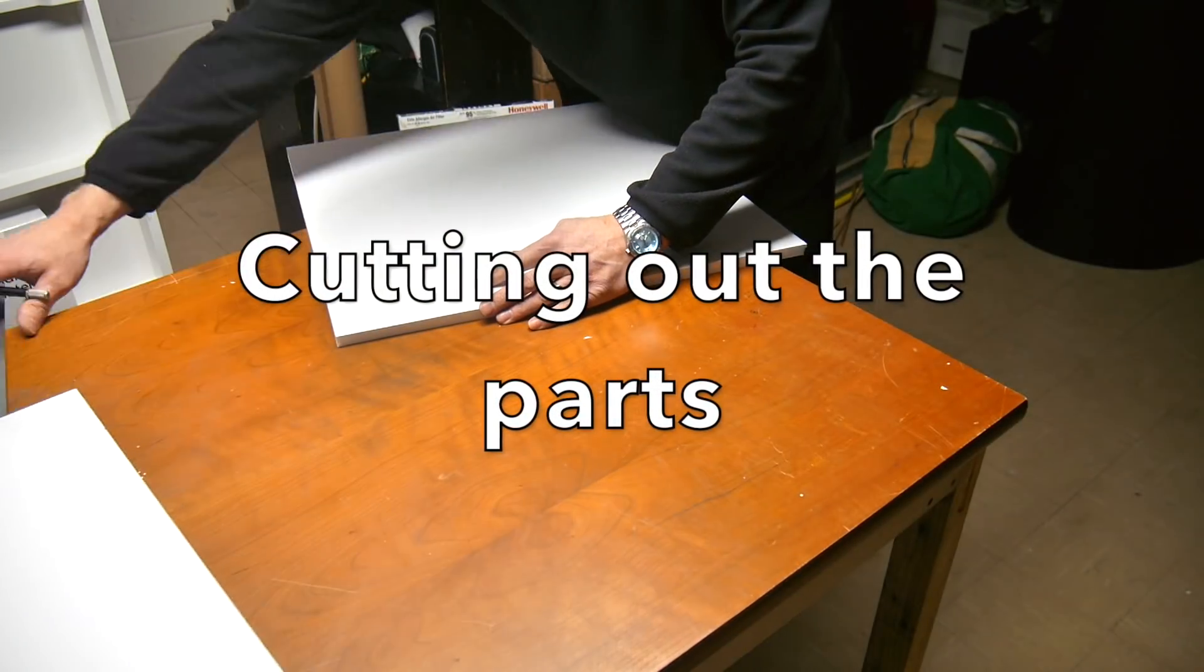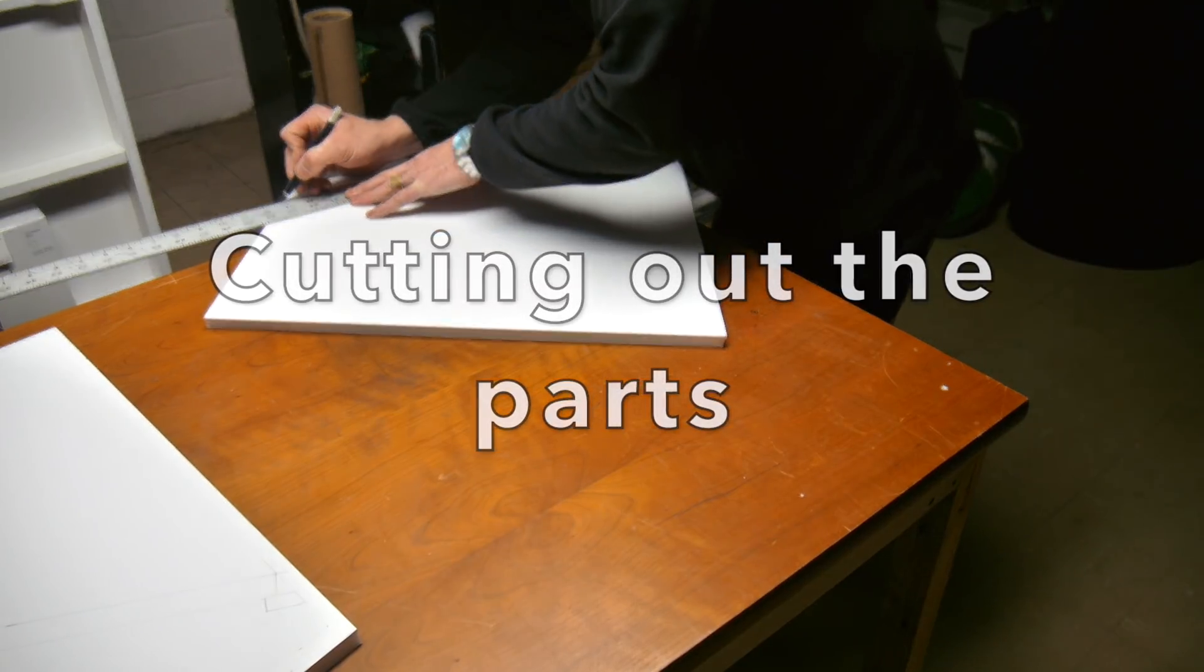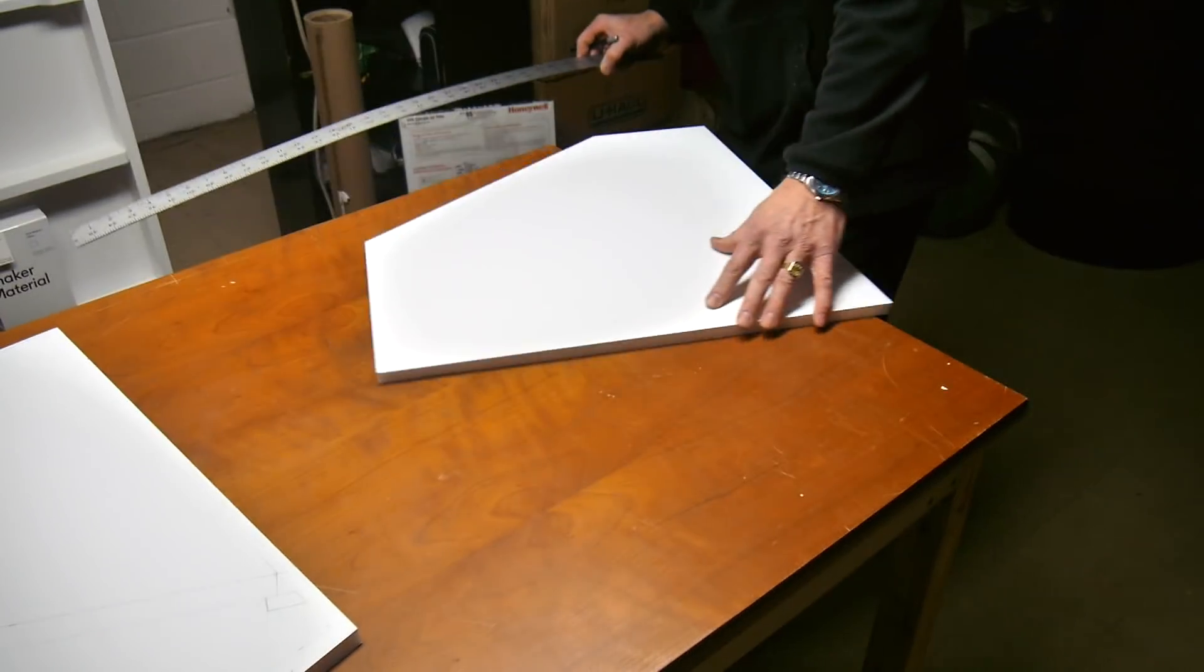I'm using a standard X-Acto blade to cut out all the pieces and quite a long ruler. The scale's a little bit different than building desktop models, but it's really not that big of a deal.